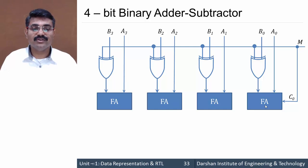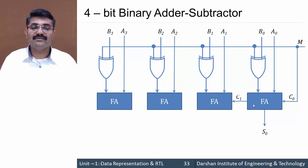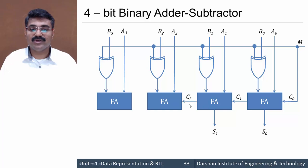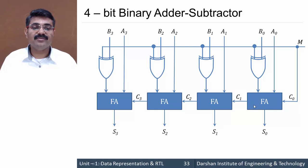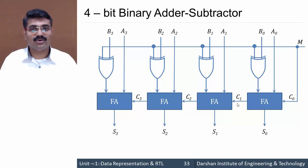The full adder outputs sum and carry, and the carry is propagated to the next full adder, which again generates sum and propagates carry, and so on. If it is a subtraction operation, instead of sum we have difference, and instead of carry we have borrow.